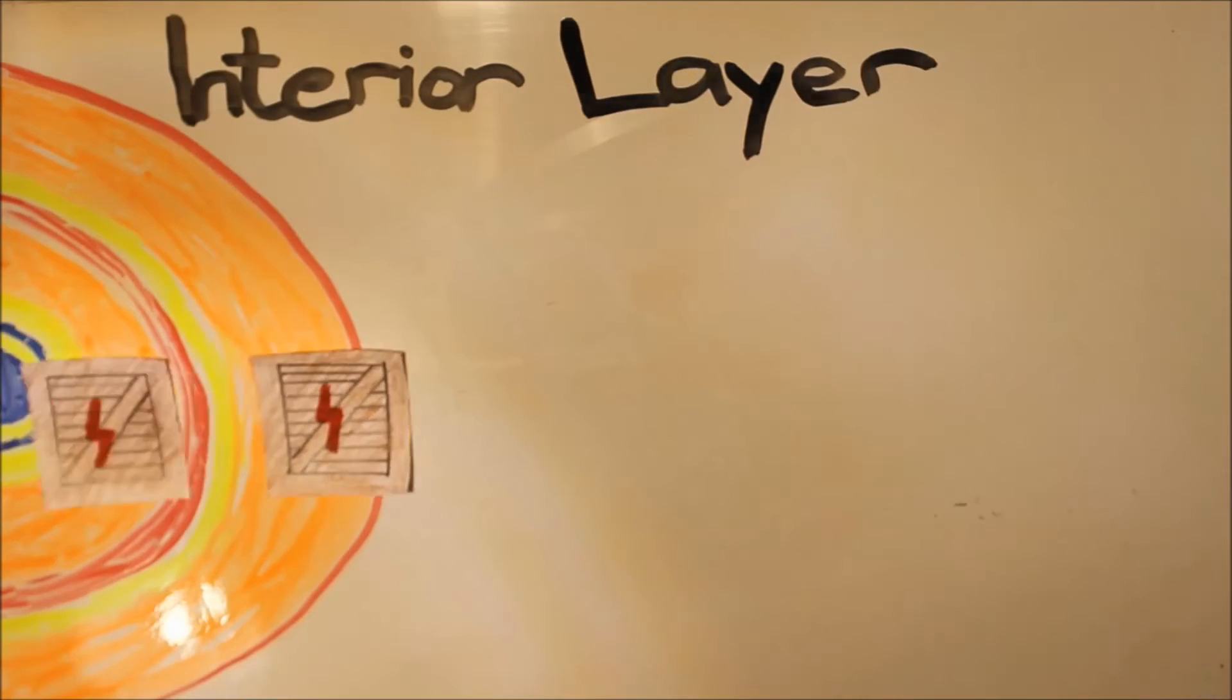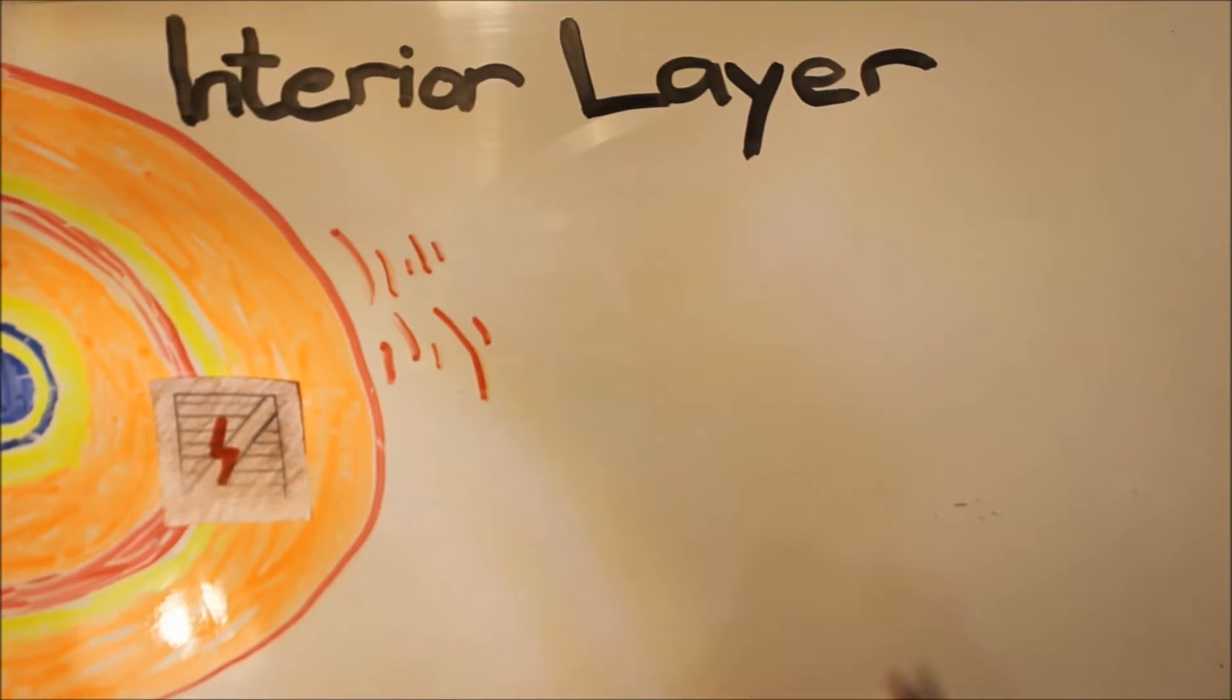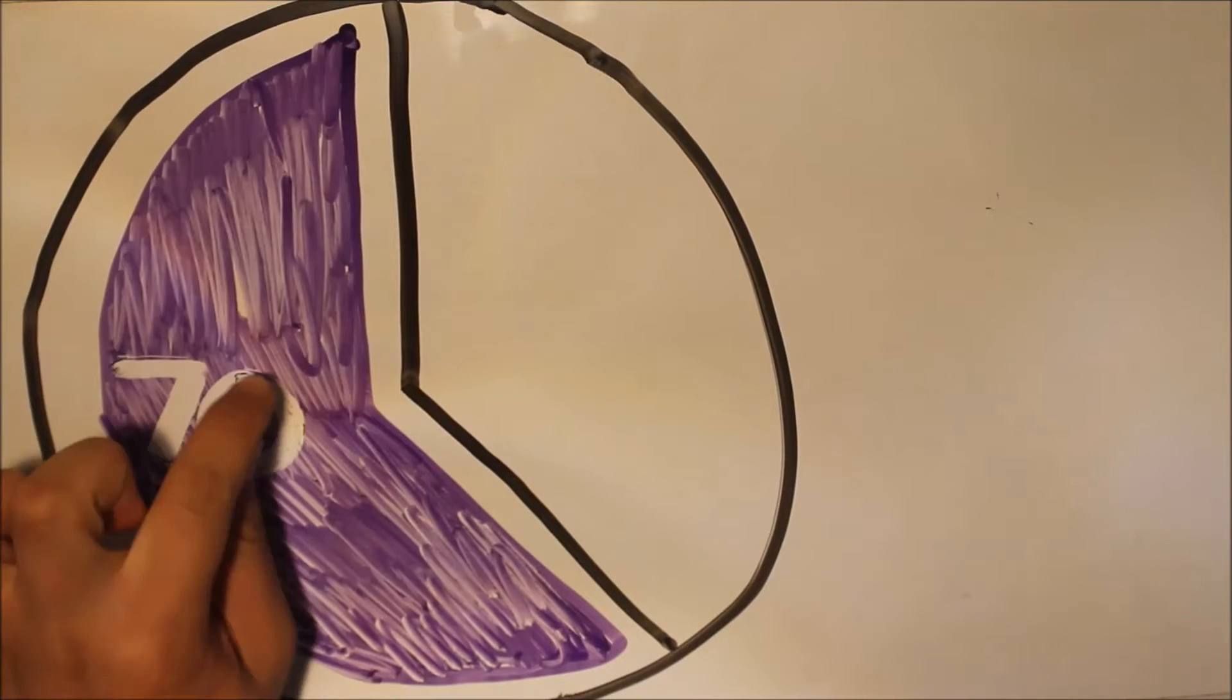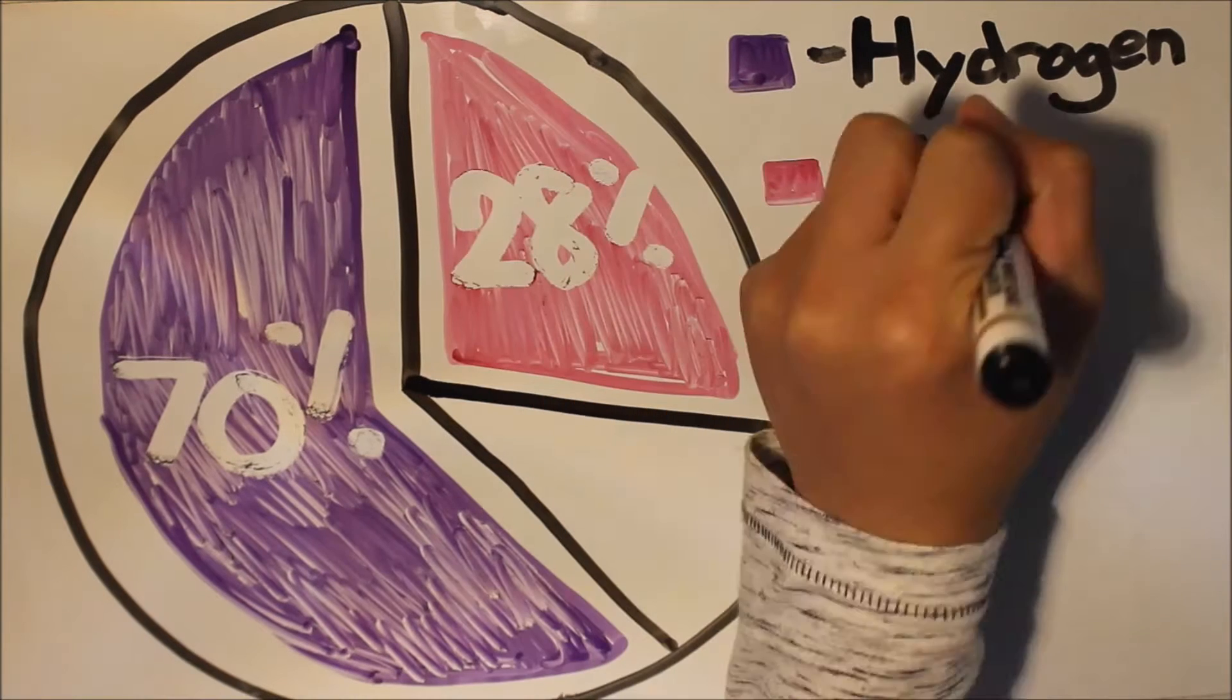The energy passes through the interior layers and into the sun's atmosphere and is released as heat and light into our solar system. About 70% of this gas is hydrogen and 28% is helium.